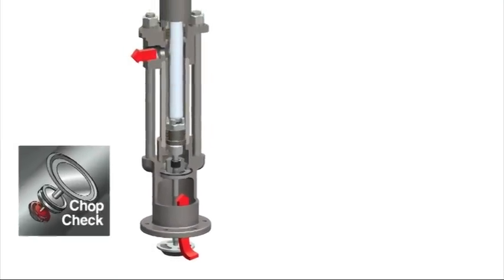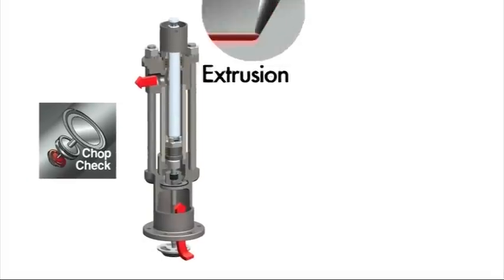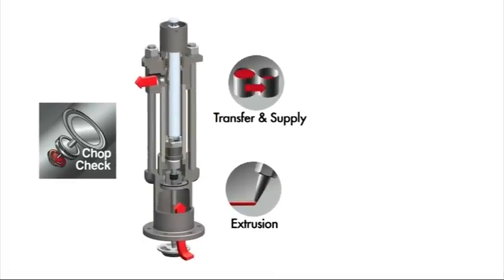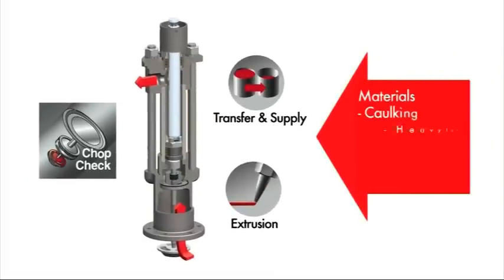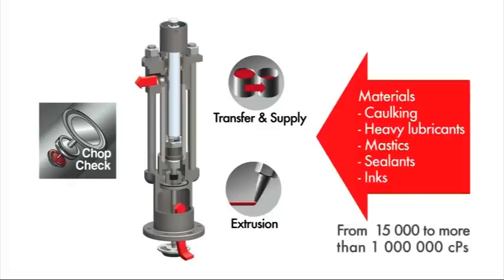Chop check pumps are designed to move medium to high viscosity fluids ranging from 15,000 to more than 1 million centipoises at delivery rates up to 46.3 LPM.